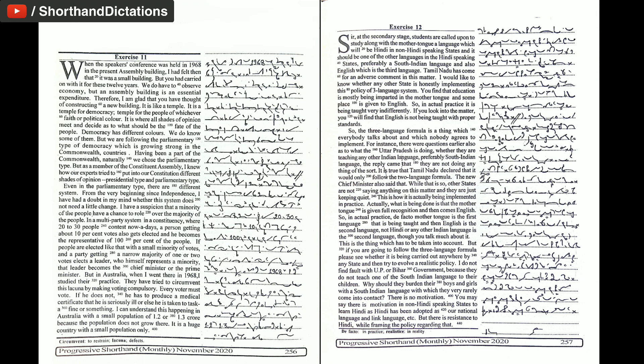We do know some of them. But we are following the parliamentary type of democracy which is growing strong in the commonwealth countries. Having been a part of the commonwealth, naturally, we chose the parliamentary type. But as a member of the constituent assembly, I knew how our experts tried to put into our constitution different shades of opinion, presidential type and parliamentary type. Even in the parliamentary type, there are different systems.